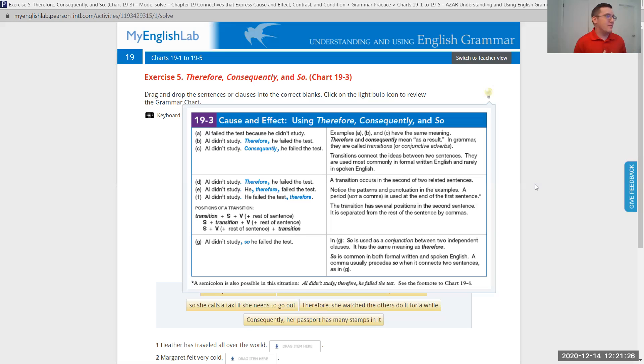Let's look at examples D, E, and F. Al didn't study, therefore, he failed the test. Al didn't study, he, therefore, failed the test. Al didn't study, he failed the test, therefore. A transition occurs in the second of the two unrelated sentences. Please notice the patterns and punctuation in these examples. You can have the transition come first, followed by a period. You can have the transition come after the subject, between the subject and verb, commas on both sides separating it. Or you can have it at the end of the sentence, again, separated by a comma.